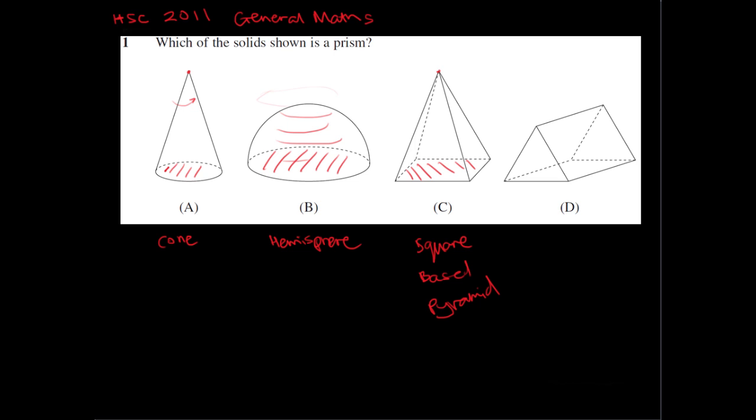And so the last option is obviously the answer, and that's because it's got a triangular face and a triangular back. So it's got identical ends and all of its sides are flat. So it's a triangular prism. And so D is the answer for that question.